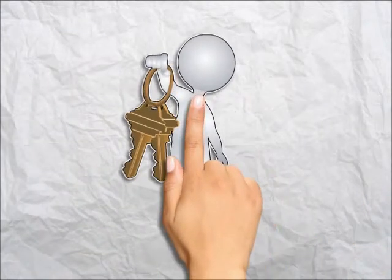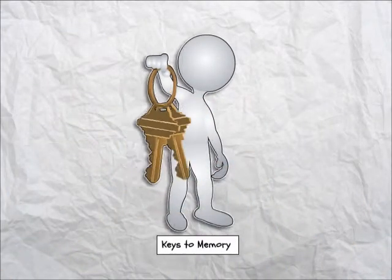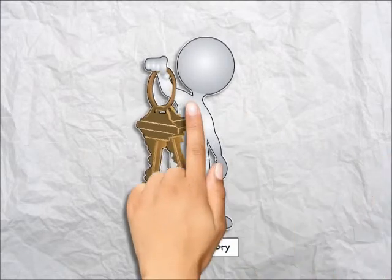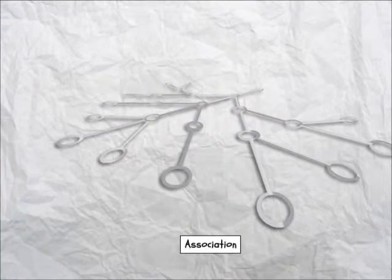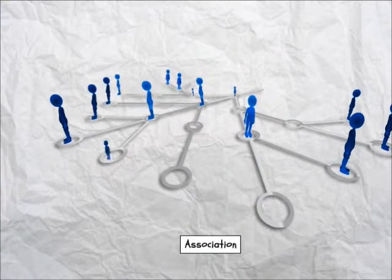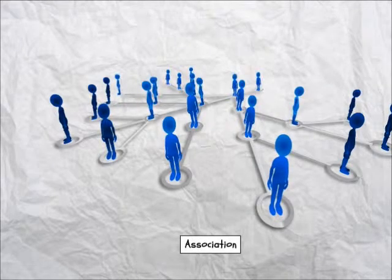There are many different memory techniques or strategies, but they all have two things in common. These two things are the key to your memory. The first is association. Association means you must link or associate what you want to learn with something you already know. Our brains learn by making connections between new knowledge and existing knowledge.